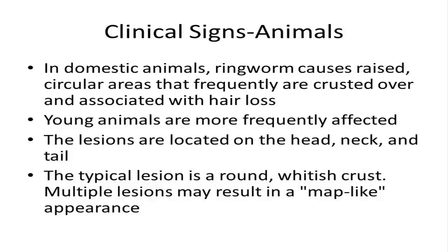Young animals are more frequently affected. The lesions are typically located on the head, neck, and tail. The typical lesion is a round, whitish crust. Multiple lesions may result in a map-like appearance, as seen in the next slide.